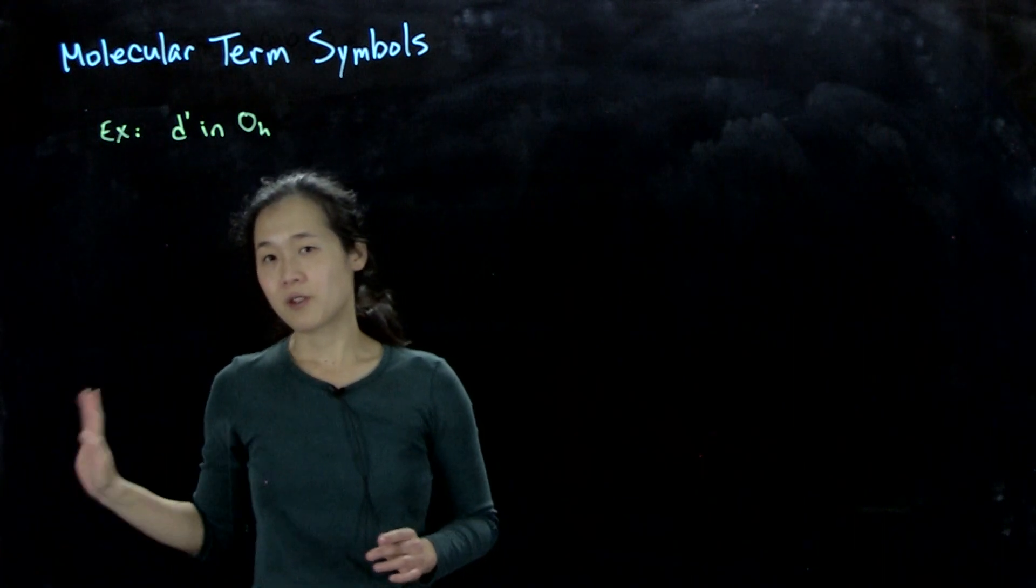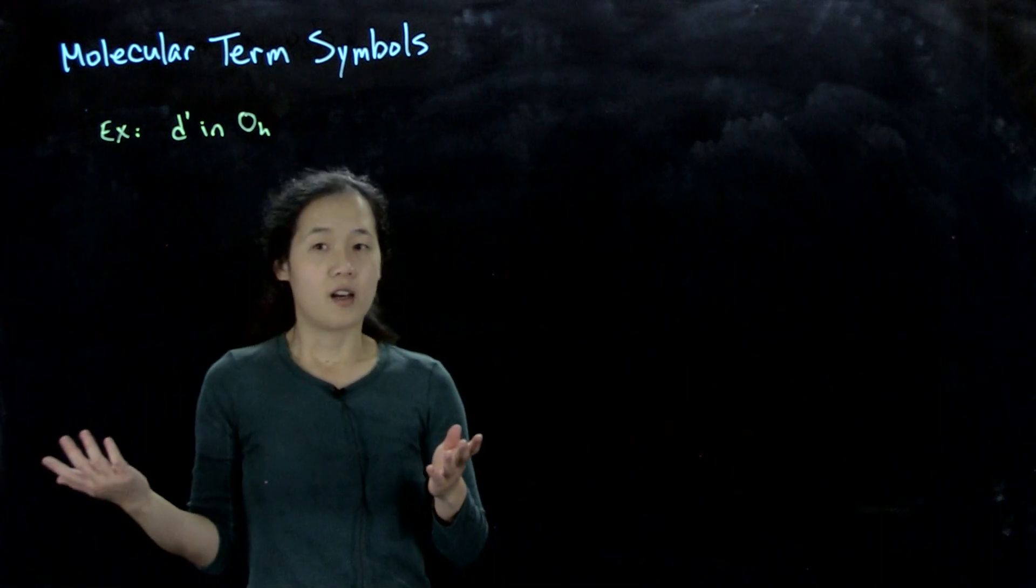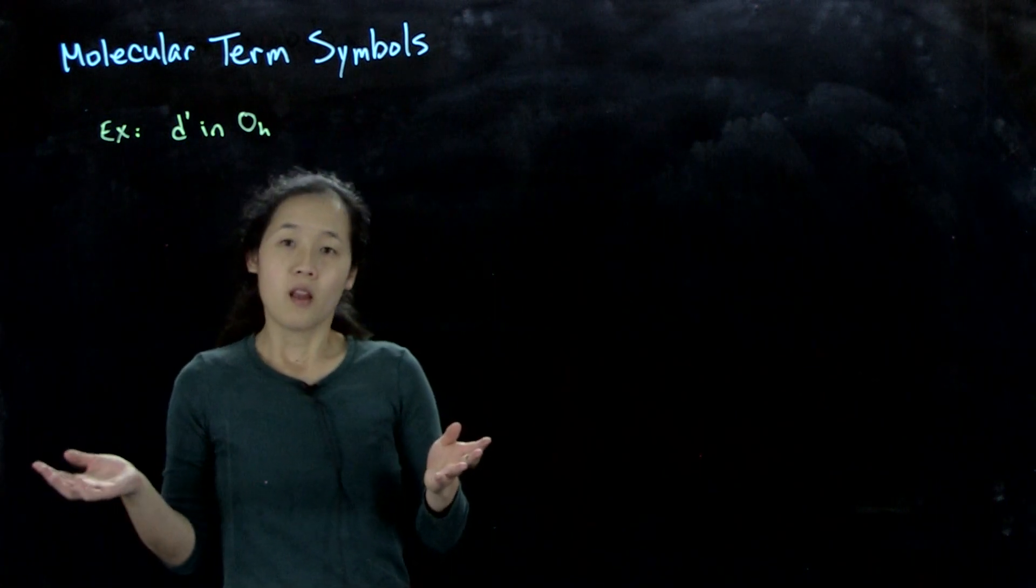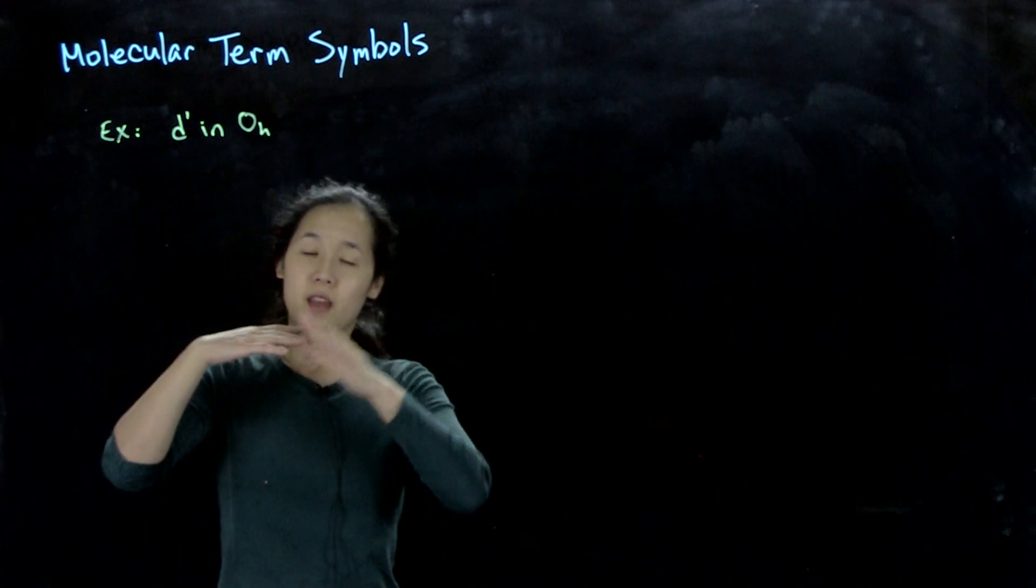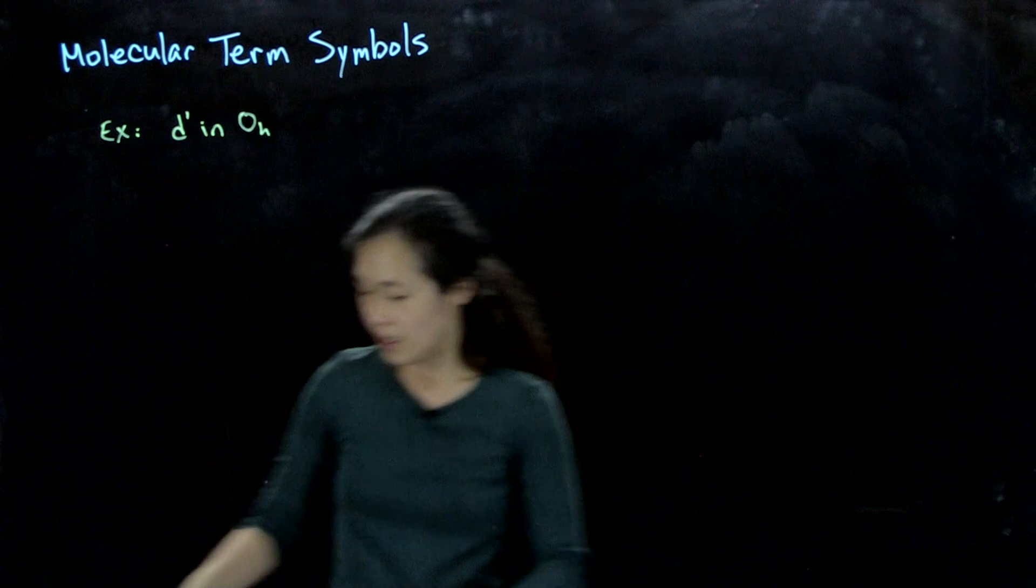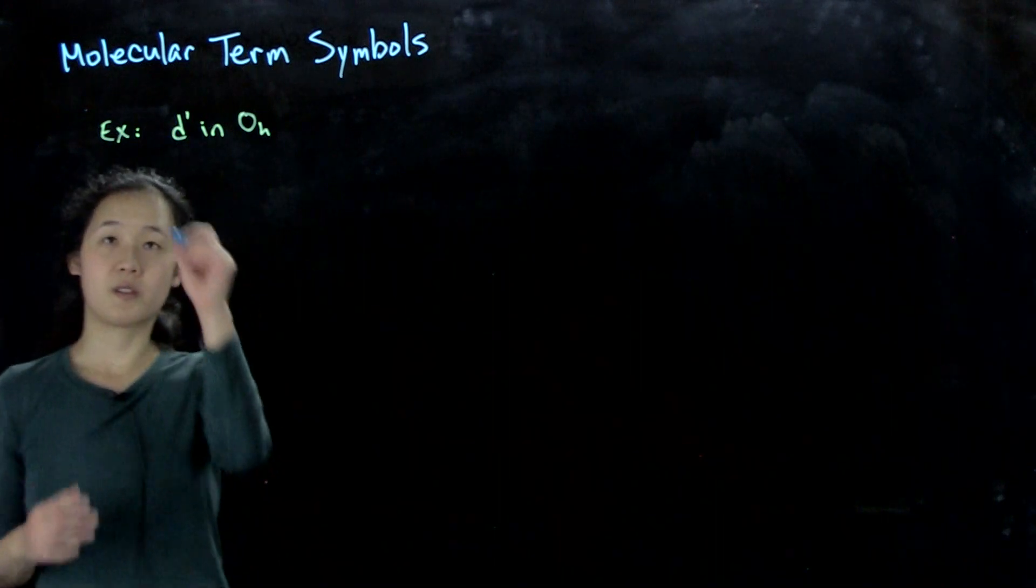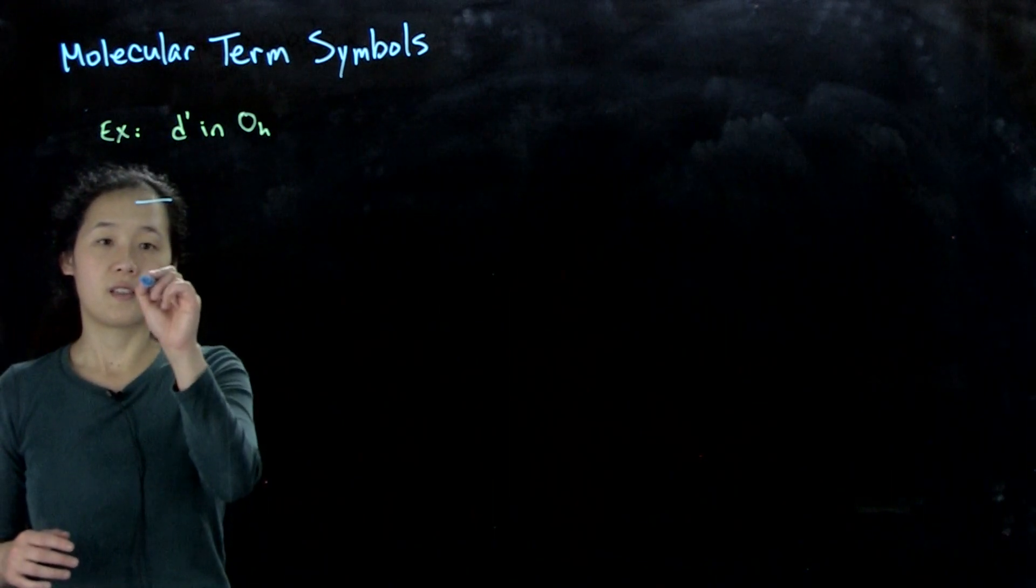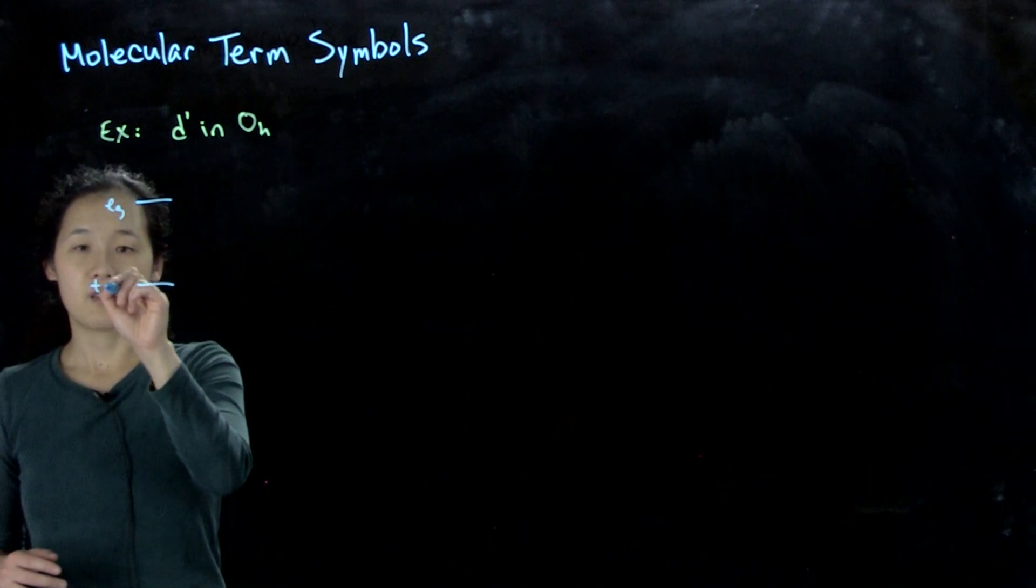So we know the term symbol for one d electron in an atom would be doublet d. But then when you think about having the ligand field splitting, now we have to add the added complication of our orbitals. So our orbitals are split into eg t2g.